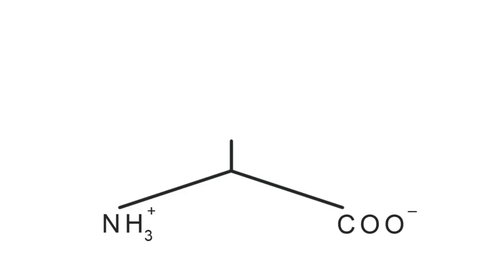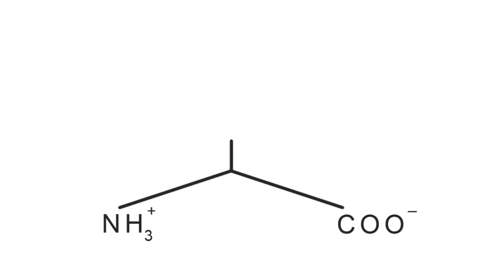Phenylalanine has a single-letter abbreviation different from its first letter because P is already taken by proline. So phenylalanine's single-letter abbreviation is F — you stress the 'ph' in phenylalanine. We've already drawn alanine, and you should know what a phenyl group is, so all you need to do is add a benzene ring connected to the backbone. That's phenylalanine.